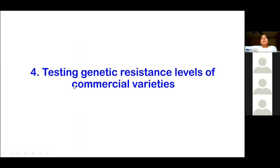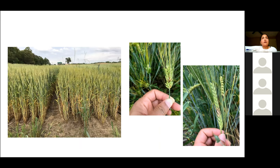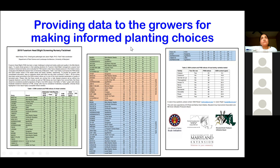Testing genetic resistance levels of commercial varieties is one of the most important deliverables from my program to farmers. I conduct triplicate testing of around 70 to 80 commercial varieties in my misted nursery, and have recently started screening barley lines as well. The output is provided to farmers as fact sheets. The 2019 Fusarium head blight screening nursery fact sheet showed some lines were moderately resistant, some moderately susceptible, and many highly susceptible. Most farmers in our region want FHB-resistant varieties, so this information is heavily used for planting decisions.